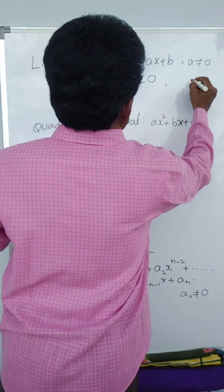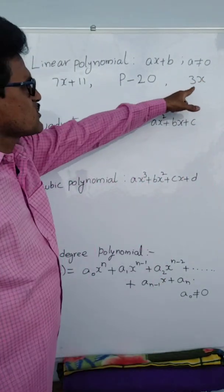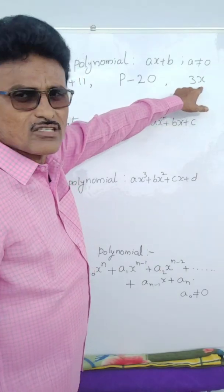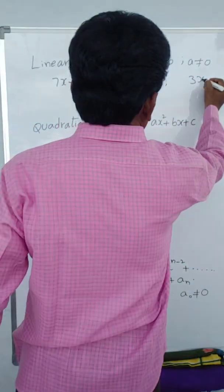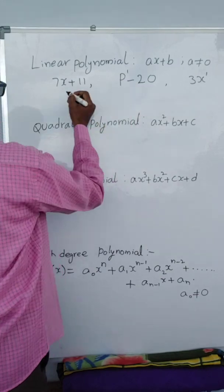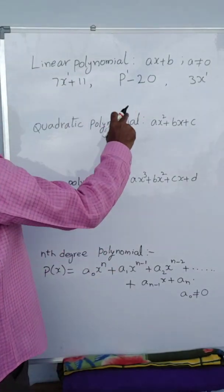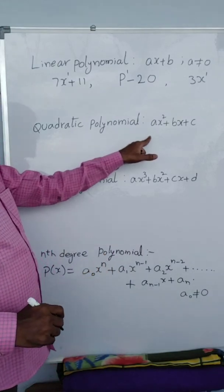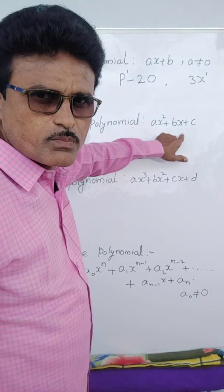Some examples of linear polynomials: 7x plus 11, p minus 20 — here the variable is p, you can write any variable — and 3x. This is also a linear polynomial because the variable x has degree 1 only. Here p has degree 1, here x has degree 1. Linear polynomial means first degree.